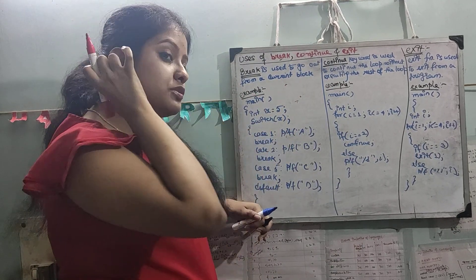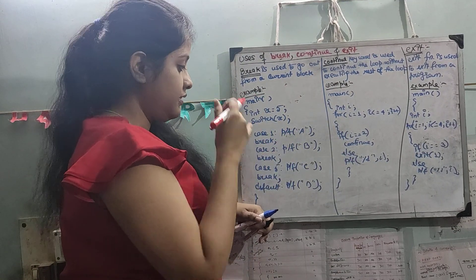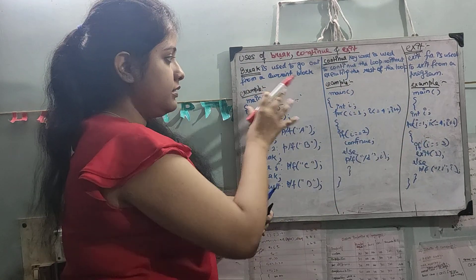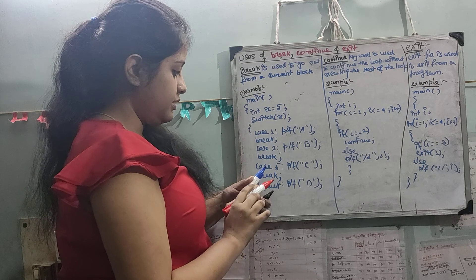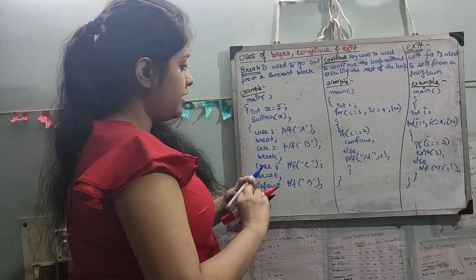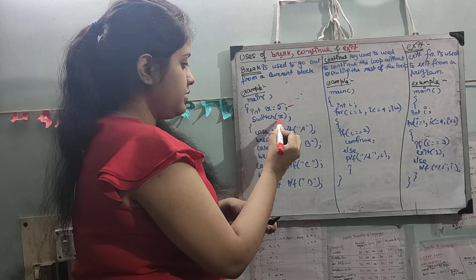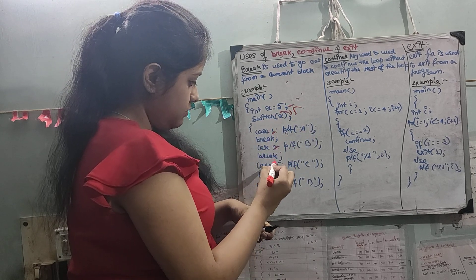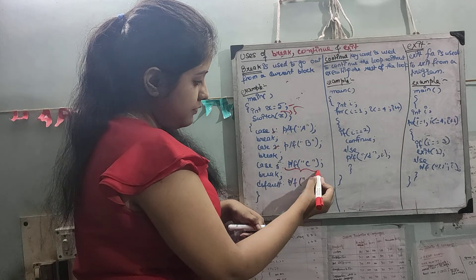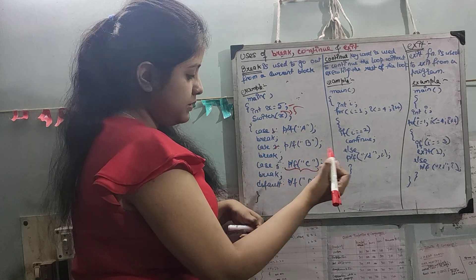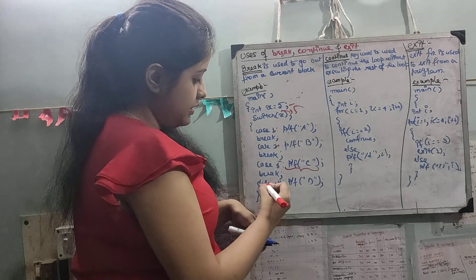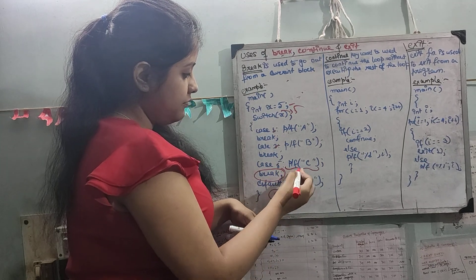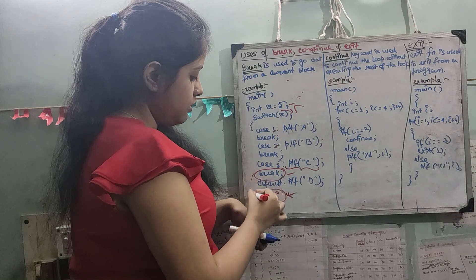This is a switch case program which I have taken earlier also. Just to differentiate between these three, I have mentioned it here again. So x equals to 5, so switch will also take 5. Where is 5? Case 1, case 2, case 5. So printf — this means it will be printed. So 'c' will be printed, because there is a break after printf, so it will go out of the block.